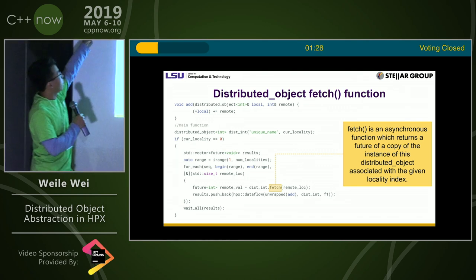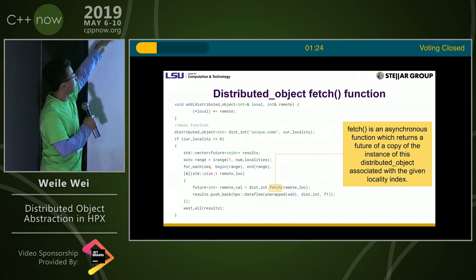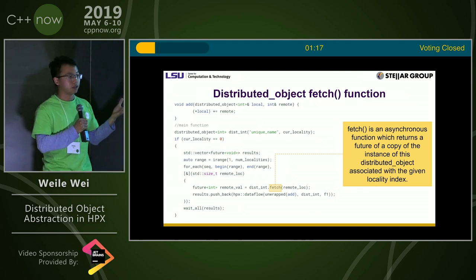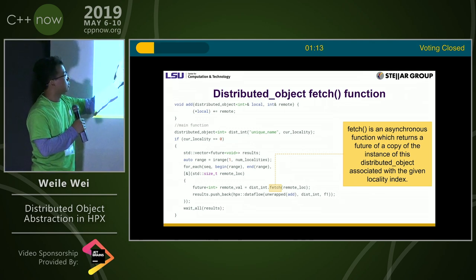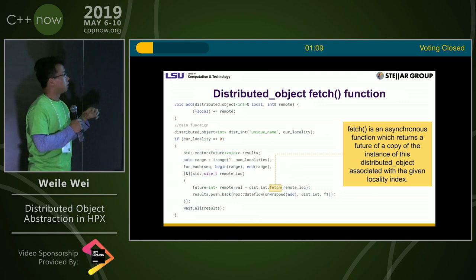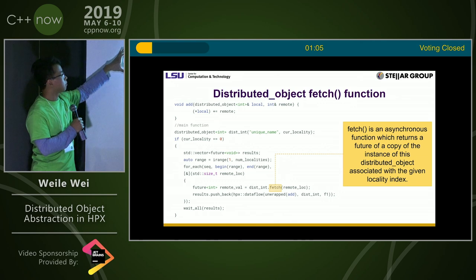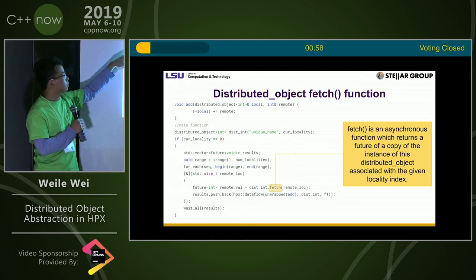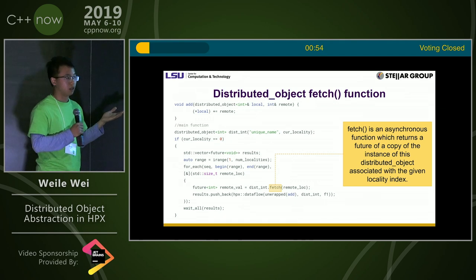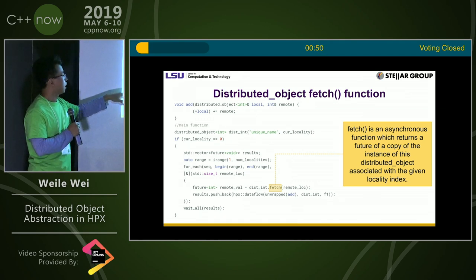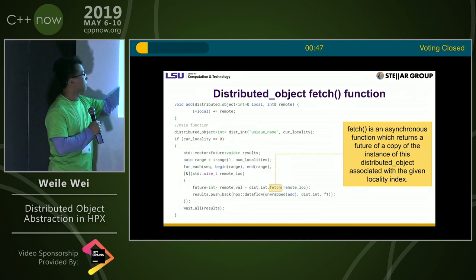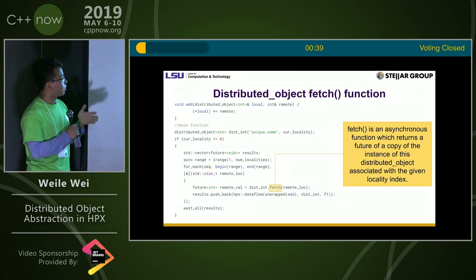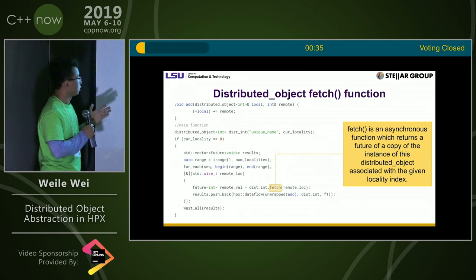The add function is shown here. In the main function, we construct the distributed int and provide a unique name as an input string, along with the current locality so it gets registered in that locality. The computation happens in locality 0. We construct a stack vector of futures of void, which prepares for the later computation in wait-all results. Using the Boost iRange library, if sitting in locality 0, we fetch data from locality 1 to the rest of the localities and add it to itself.